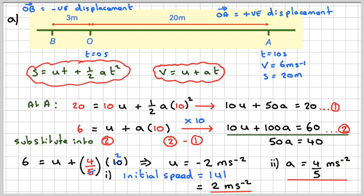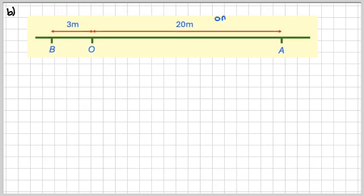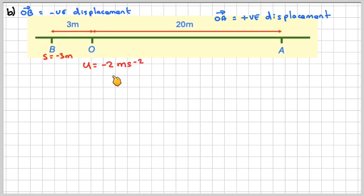Right, now we've got to show that this particle will never actually get to B. So using the same diagram again, OA is positive displacement, and OB is negative displacement. S here will therefore be minus 3 metres.